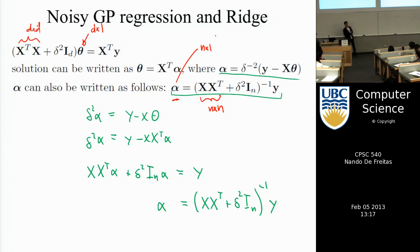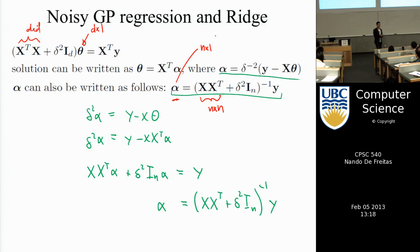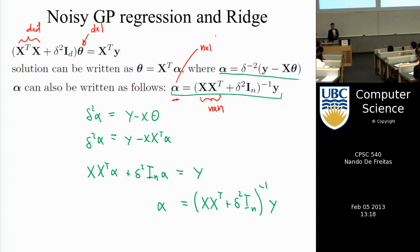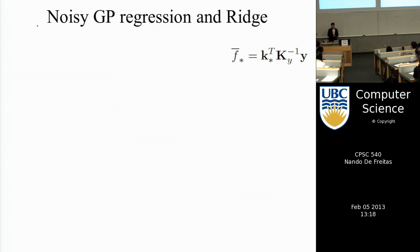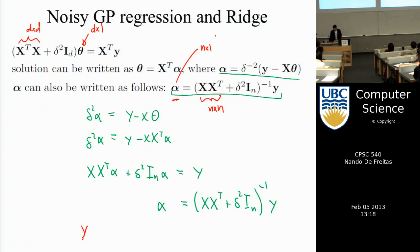This trick also brings ridge regression close to Gaussian processes. The prediction y-star for a new input x-star is just x-star times theta, or equivalently x-star times X-transpose times alpha. Combining with the expression for alpha, this is exactly the GP mean prediction, where X X-transpose plays the role of the kernel matrix.